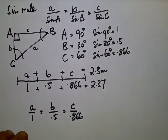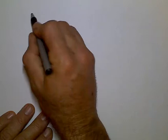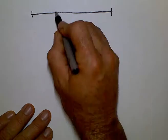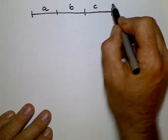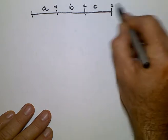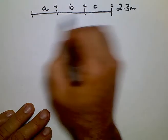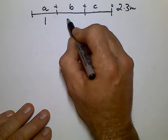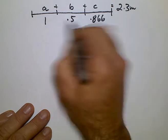Let's draw that piece of steel again. We have A, B and C. Add them together and get 2.3 metres in this case. And the Sine of the angles was 1, 0.5, 0.866, which is our ratios.